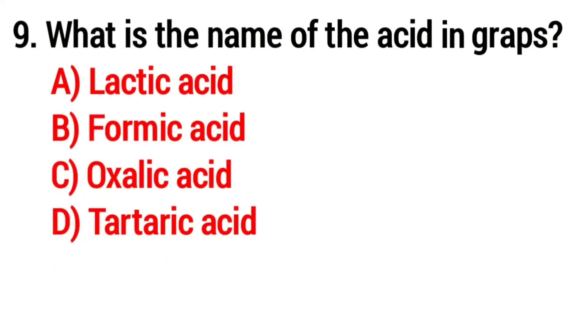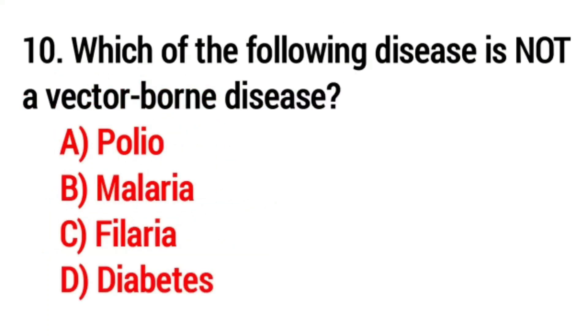Question number nine: What is the name of the acid in grapes? Answer: option D, tartaric acid. Question number ten: Which of the following disease is not a vector-borne disease? Answer: option A, polio.